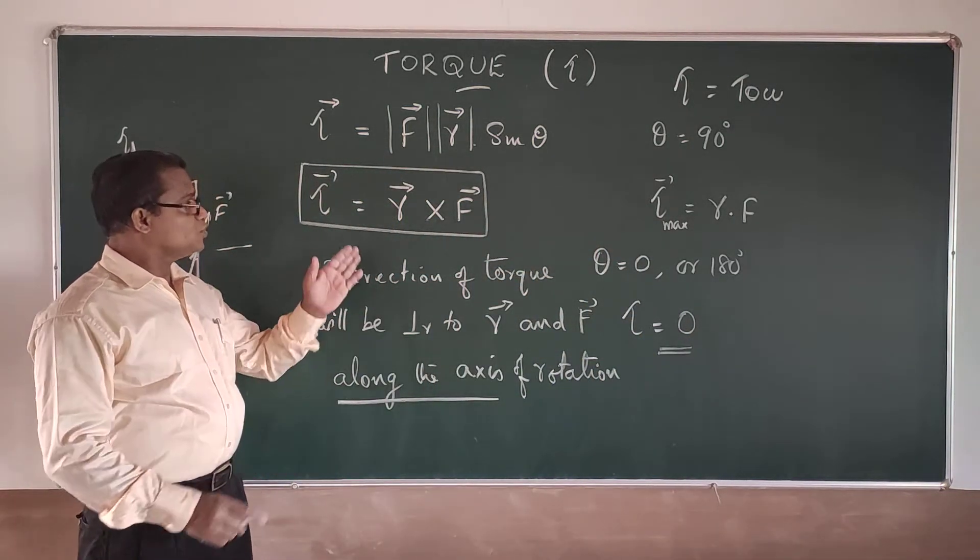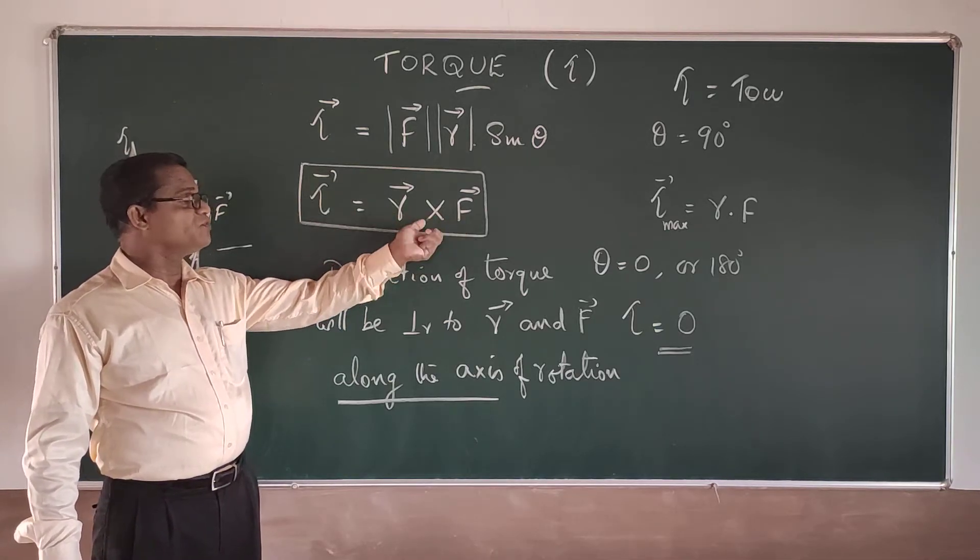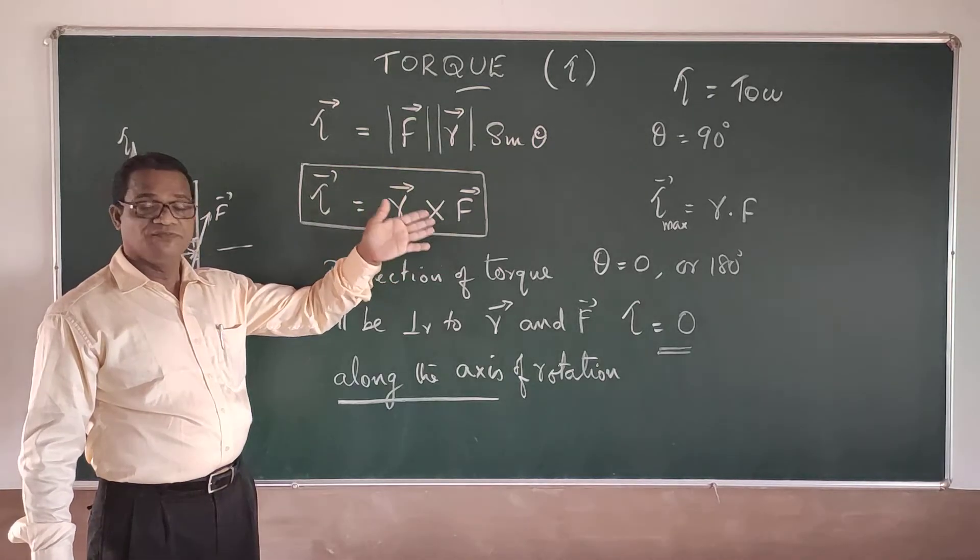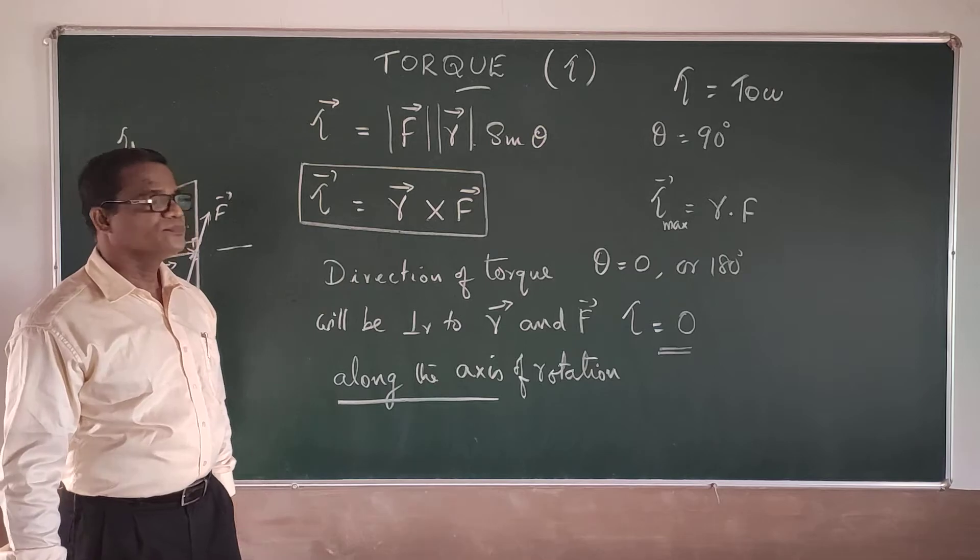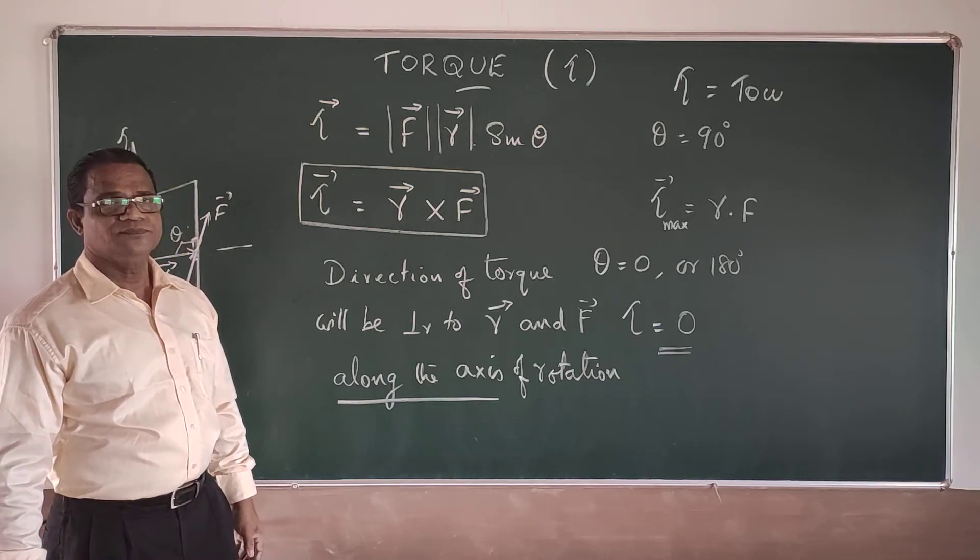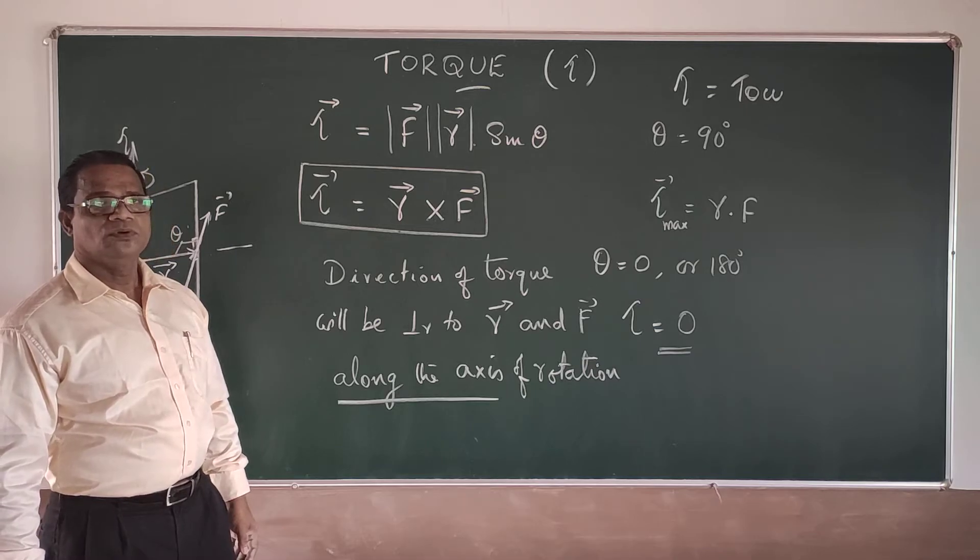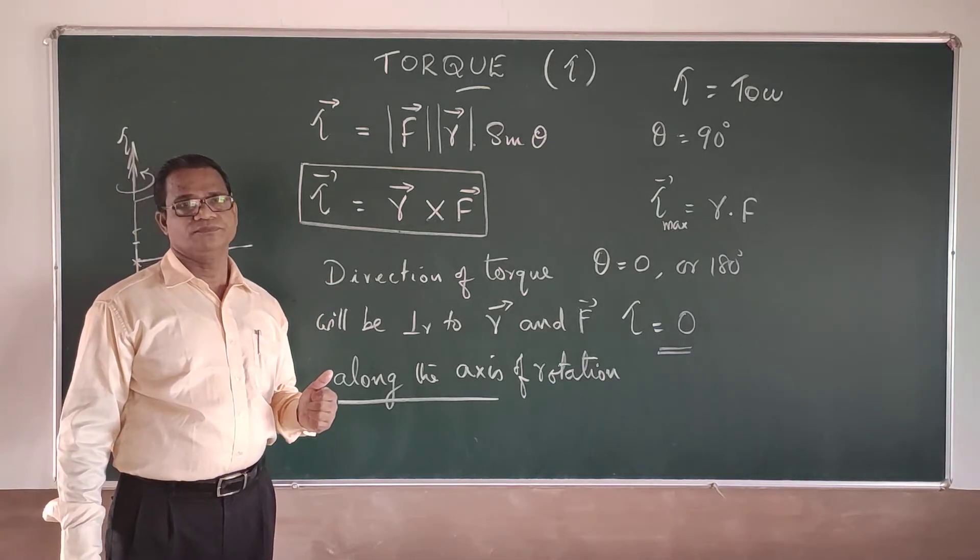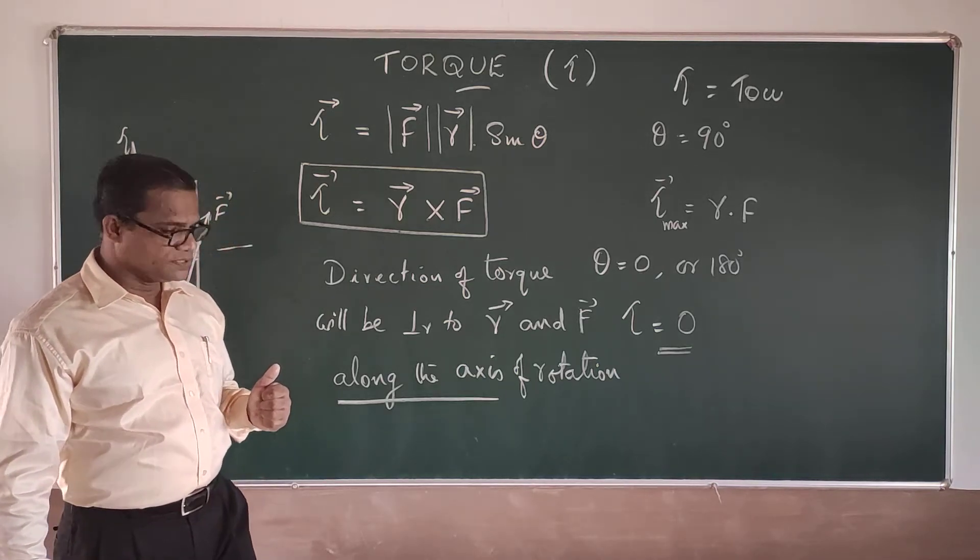So R cross F, remember the rotation form, R cross F. You don't have to write F cross R, it is wrong. And if you write F cross R, there must be a negative sign to be applied to it. Alright? So this is very important. Now, one more point to note here.